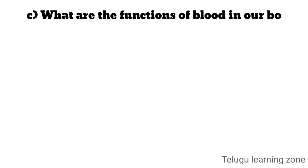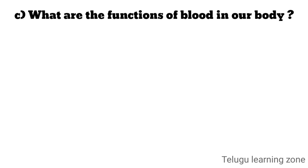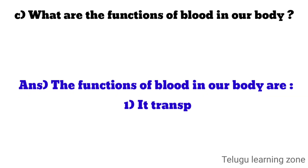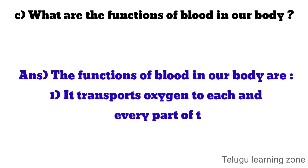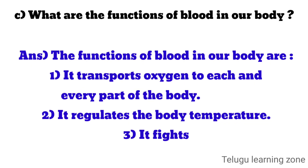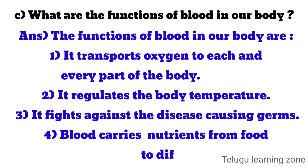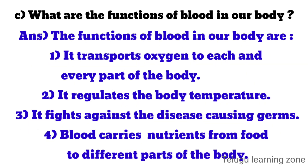What are the functions of blood in our body? The functions of blood in our body are: it transports oxygen to each and every part of the body; it regulates the body temperature; it fights against disease-causing germs; and blood carries nutrients from food to different parts of the body.